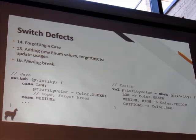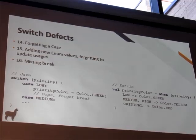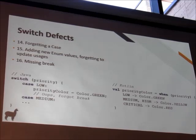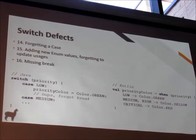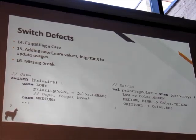Even if you remember everything, someone else can modify the enum, add a new value, and not be aware that you're also using that enum. Another example is a missing break: if we have a case for low priority with color green but forget the break, it will fall through and assign the color that medium uses — yellow. In Kotlin, there are no break statements because there's no switch statement, so this can't happen.